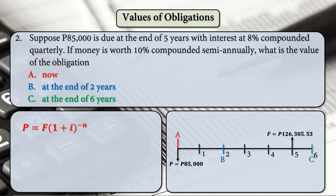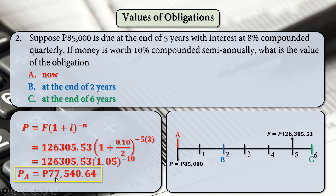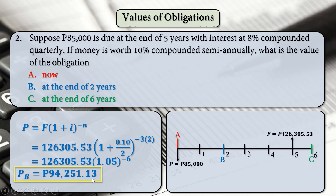For Letter A (value now): P equals 126,305.53 times (1 plus 0.10 divided by 2) raised to negative 5 times 2, which is 1.05 raised to negative 10. The answer is 77,540 pesos and 64 centavos. For Letter B (value at end of year 2): using the same formula with T equal to 3 years between year 2 and year 5, giving 1.05 raised to negative 6, the answer is 94,251 pesos and 13 centavos.